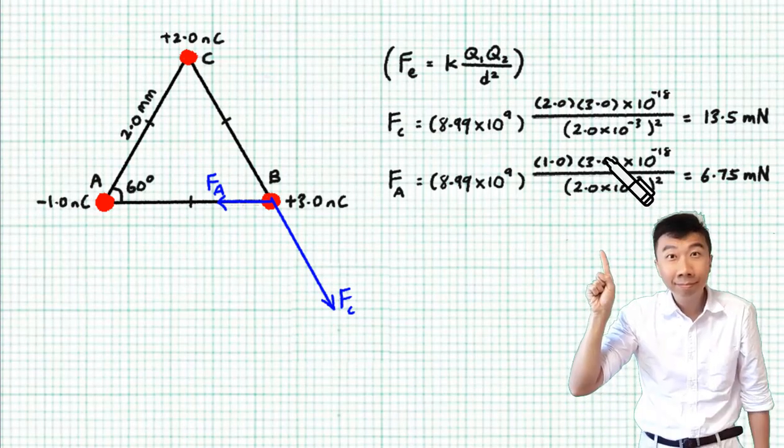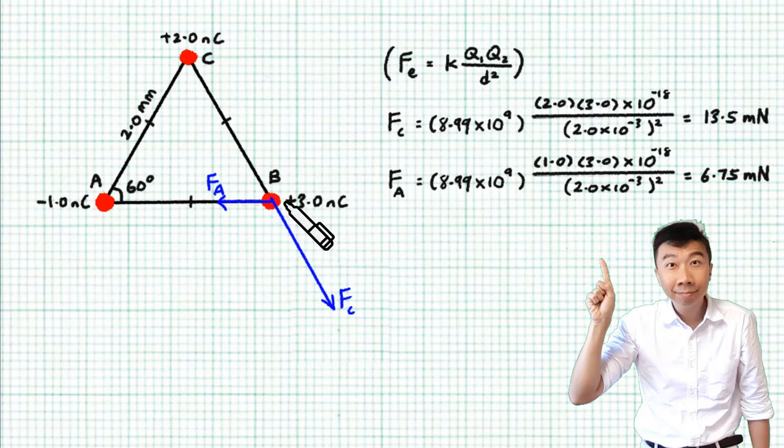Now notice that I didn't bother to put in the negative signs when I substitute the magnitude of the charges. So in H2 physics, usually we use Coulomb's law just to calculate the magnitude of the electric force. As for the direction, we'll figure it out from the context of the question.